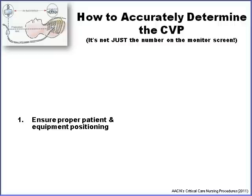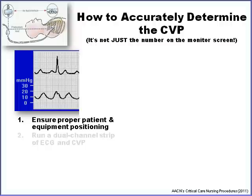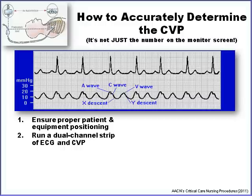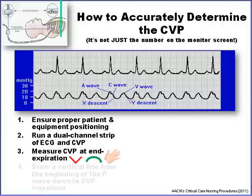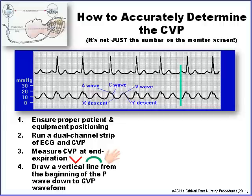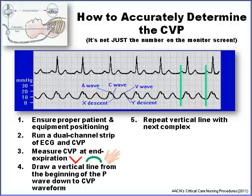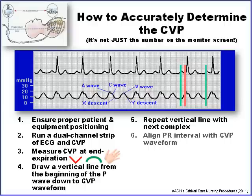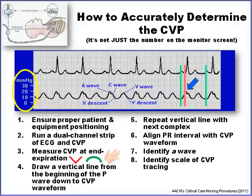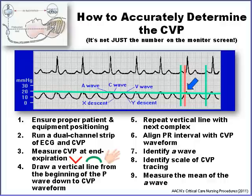How do we accurately determine the CVP? First, make sure your patient is properly positioned and you've leveled and zeroed the air-fluid interface to the patient's phlebostatic axis. Then run a dual-channel strip of the EKG and CVP so you can compare the two. Measure the CVP at end expiration. Draw a line from the beginning of the P wave down to the CVP waveform, and then do it one complex over. Now you've isolated the A, C, and V waves. Align the PR interval with the CVP waveform and identify your A wave. Check that your scale isn't too big or too small, then draw a line from the middle of your A wave over to the scale. That is your CVP number.